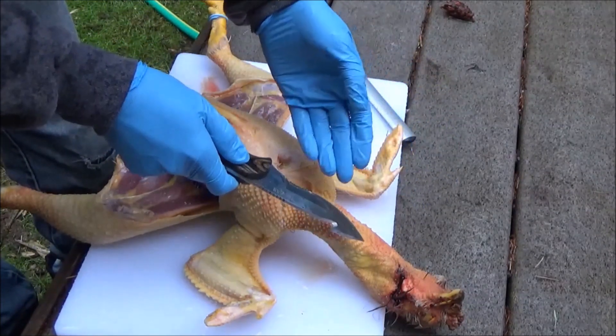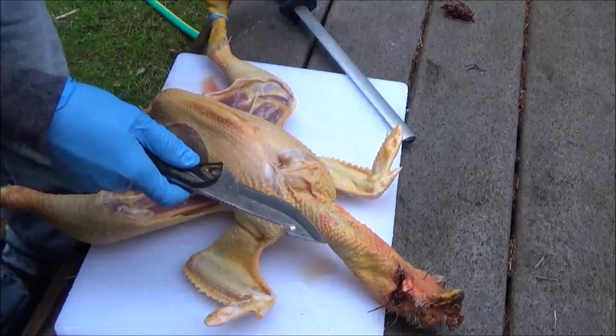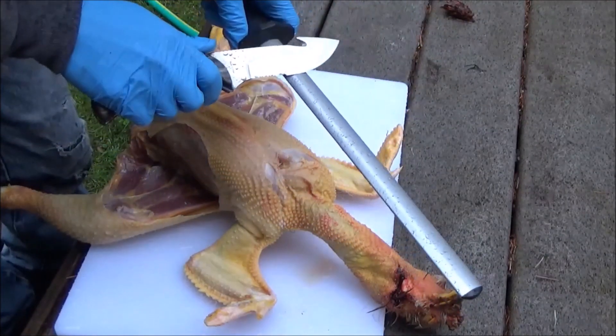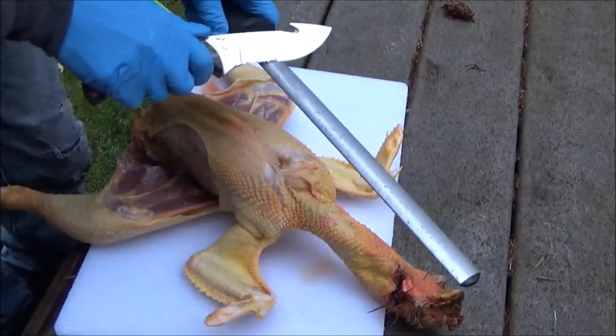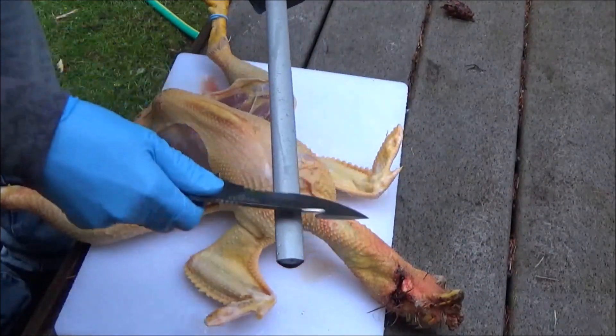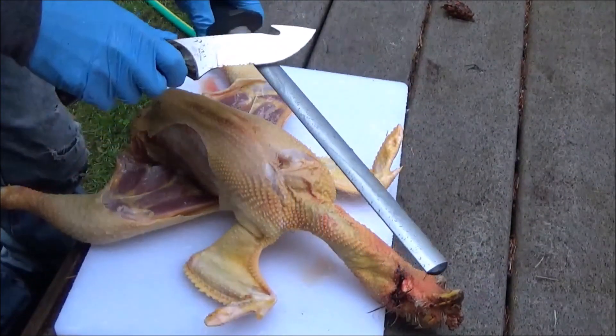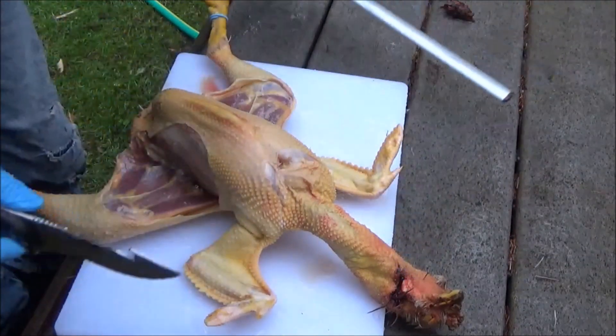At this point, a regular honing steel is not going to work. It's not going to do anything. So we're going to do a few swipes on this diamond steel and this should help us get back to work really quickly. Let's see.